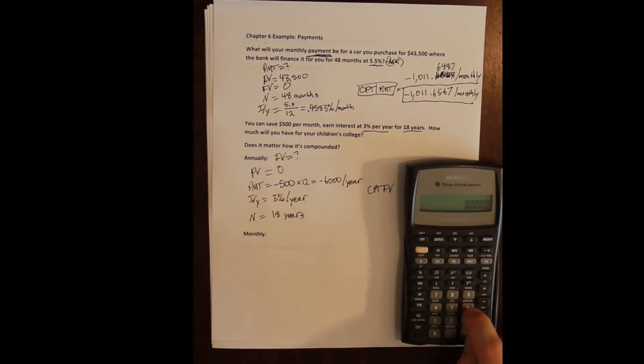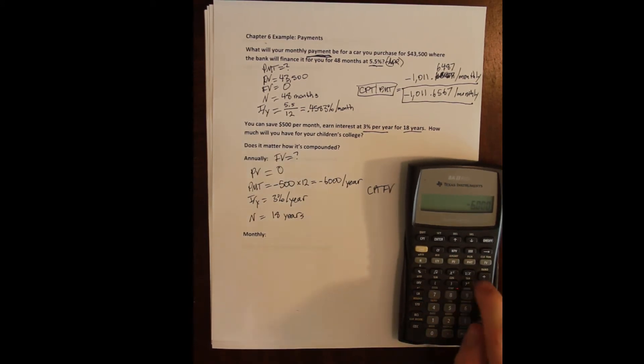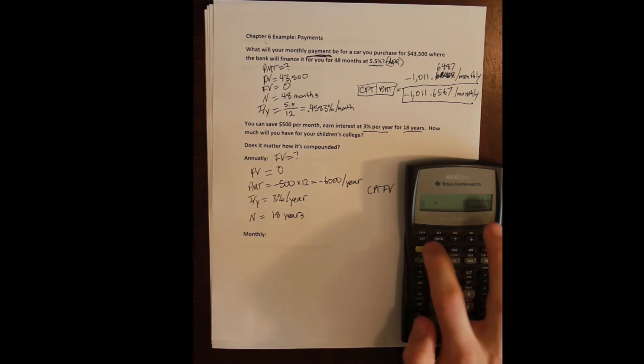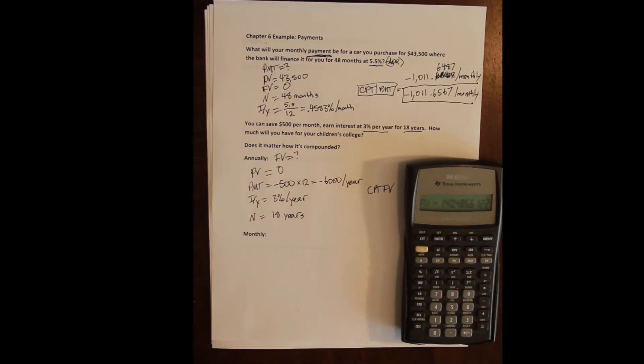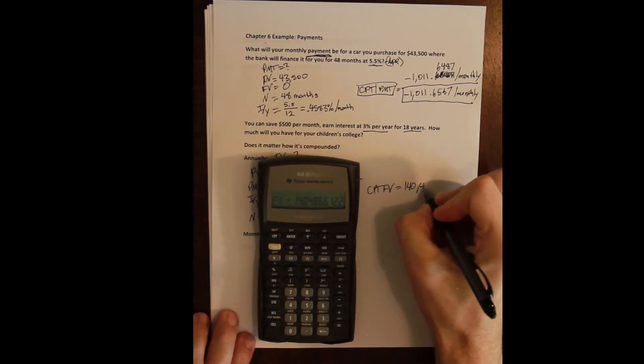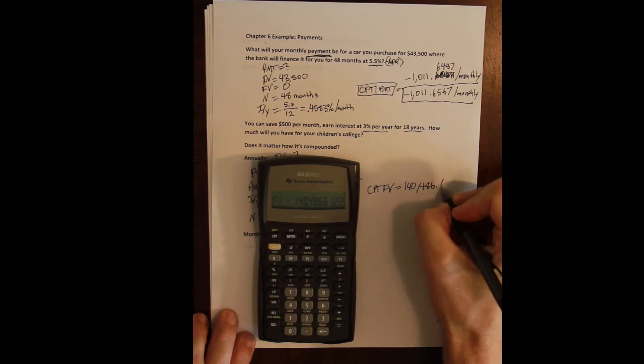So what I do is I compute my future value. Here again, first things first, I clear my time value of money. I have six thousand dollars—this is a cash outflow, so that's a negative—that's my payment. Three percent per year, so three I/Y. 18 years is the length of the account. My present value is zero.